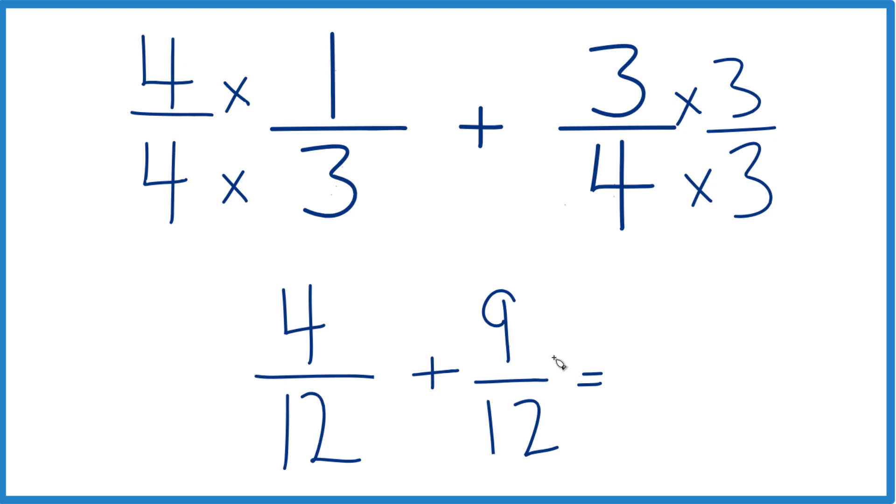So we can just add the numerators together now. 4 plus 9, that's 13. And then when we add fractions, when the denominator is the same, we just keep it the same. So 1/3 plus 1/4, that's 13/12.